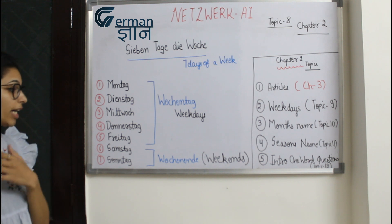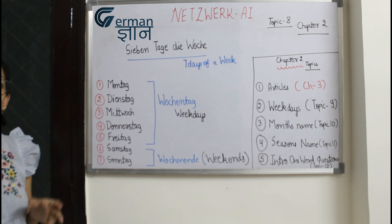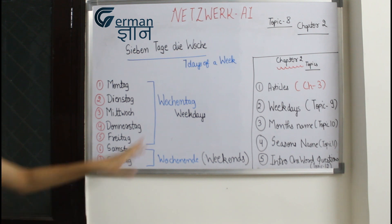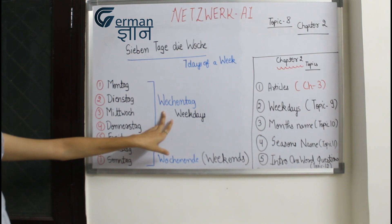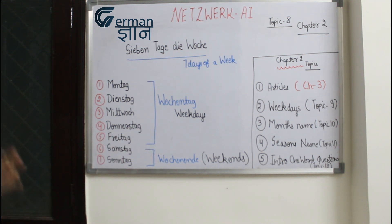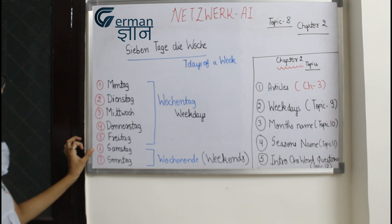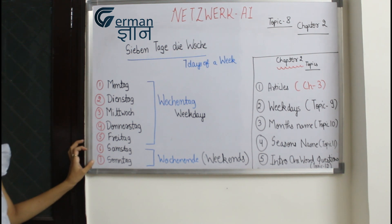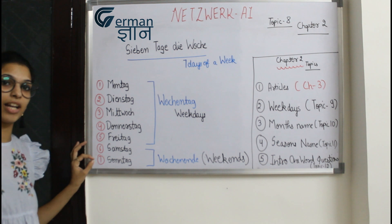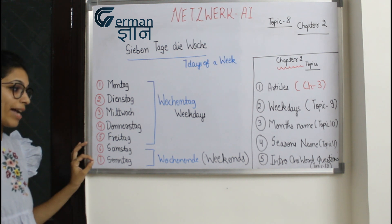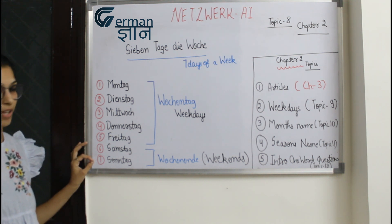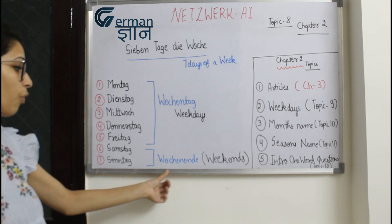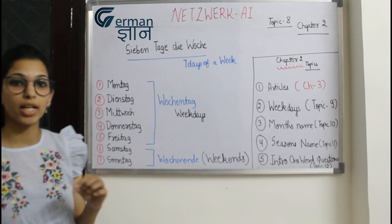Monday, Tuesday, Wednesday, Thursday, Friday are all the weekdays, and weekdays are known as Wochentag. So here it is written Wochentag. Now let's come to the sixth - Saturday, which is Samstag. Sunday is Sonntag, and Saturday and Sunday are known as the weekend, which are the favorite ones for us - that is known as Wochenende.